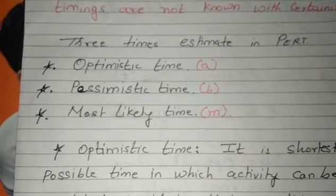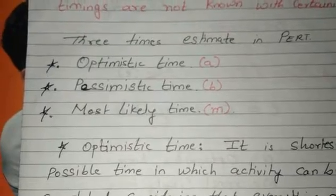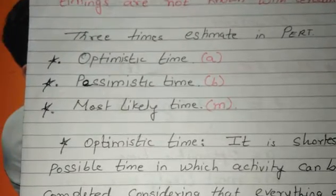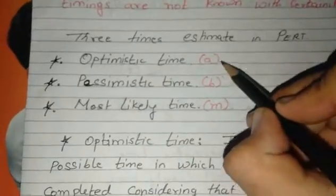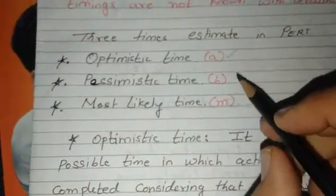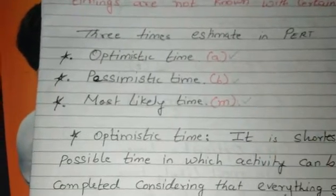In PERT we are going to study three different times: Optimistic Time, Pessimistic Time, and Most Likely Time. Optimistic Time is always denoted by A, Pessimistic Time is always denoted by B, and Most Likely Time is denoted by M.